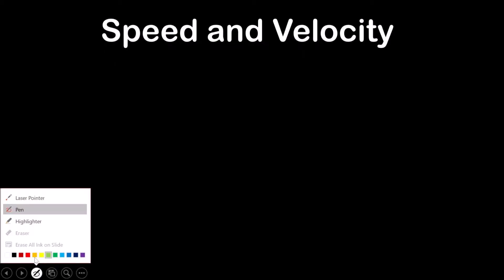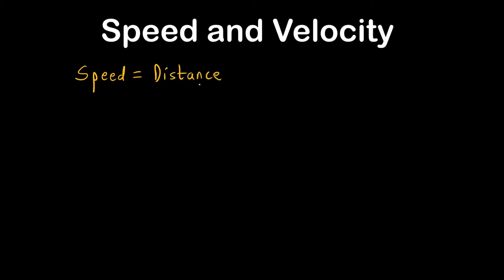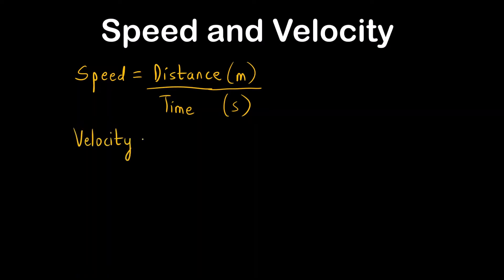Now let us understand speed and velocity. Speed is nothing but distance traveled per unit time — so its unit is length (e.g., meter) divided by time (e.g., second). Velocity is displacement divided by time, with the same units.